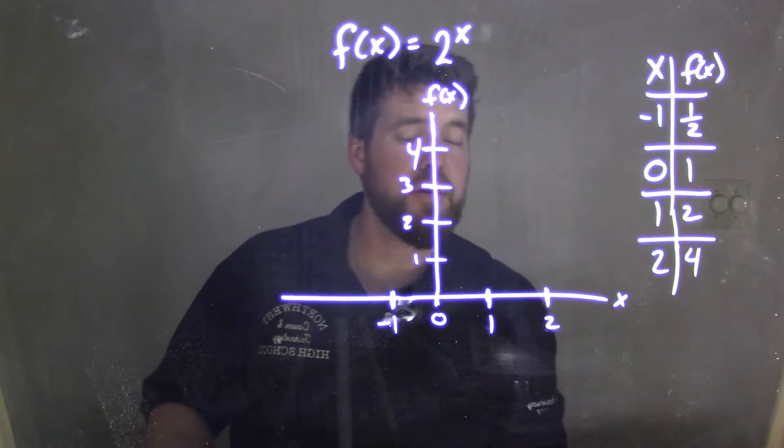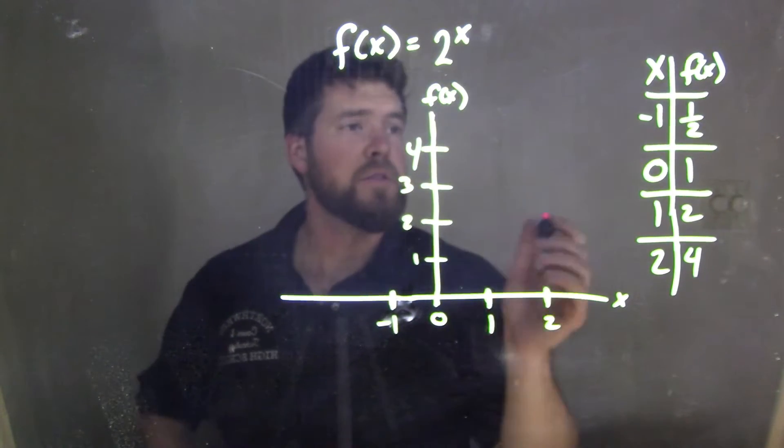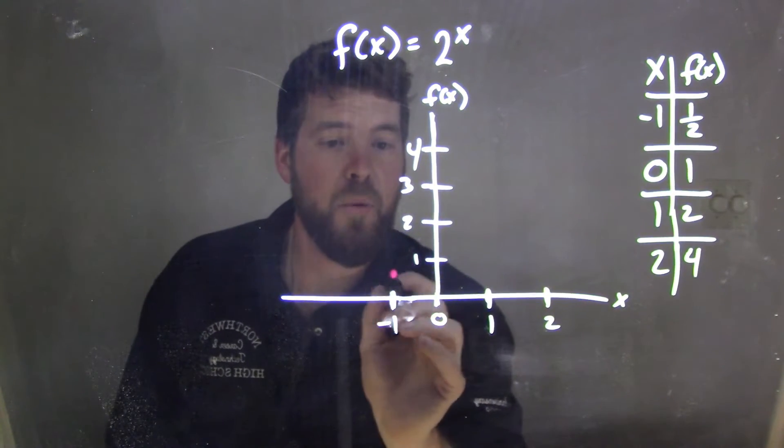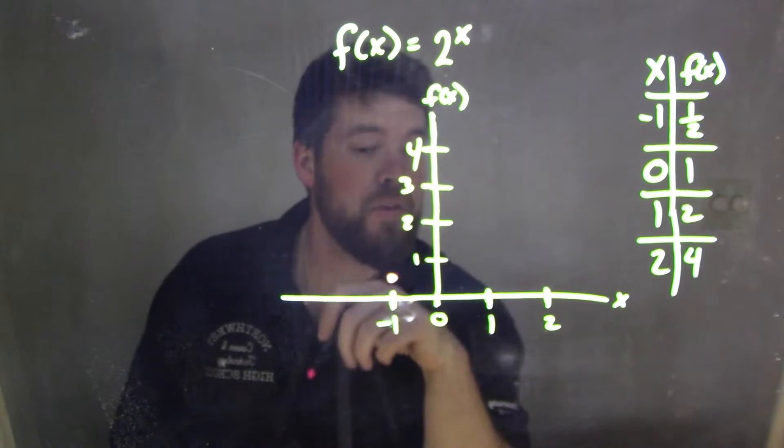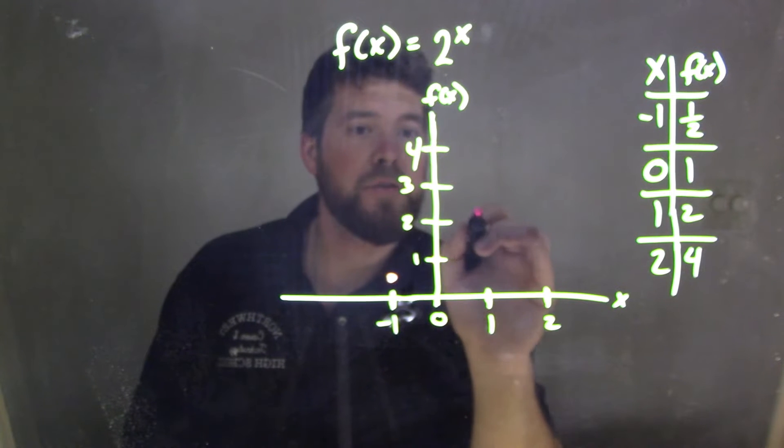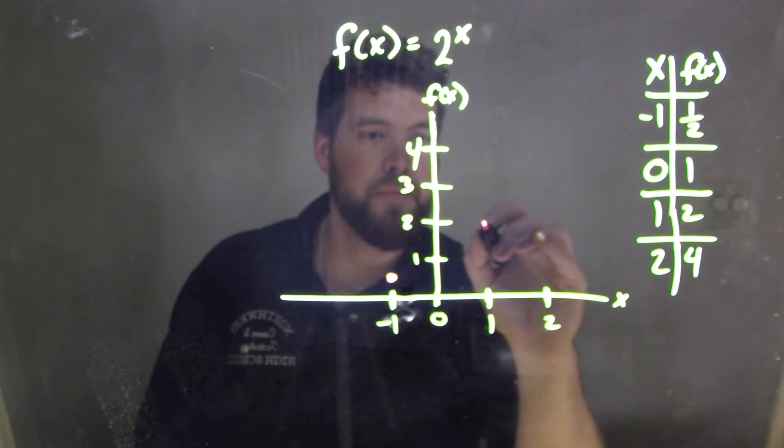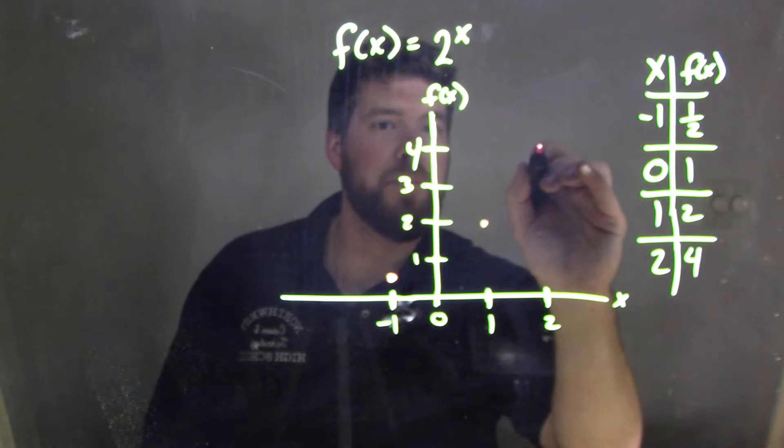So let's plot some points of our function f of x. We know at negative 1 we have 1 half halfway between here. At 0 we have 1. At 1 we had 2. And at 2 we had 4.